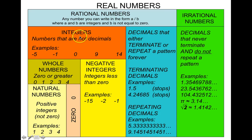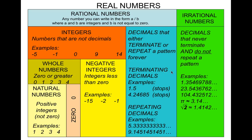Integers are one type of rational number, but there's another type. Decimals that either terminate or repeat a pattern forever are also rational numbers, even though they're not integers. A terminating decimal is a decimal that stops — for example, 1.5. It terminates after the 5, so it is considered a rational number.